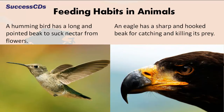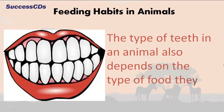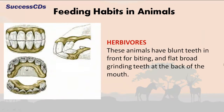Whereas an eagle has a sharp and hooked beak for catching and killing its prey. The type of teeth in an animal also depends on the type of food they eat. Herbivorous animals have blunt teeth in the front for biting and flat, broad, grinding teeth at the back of the mouth.